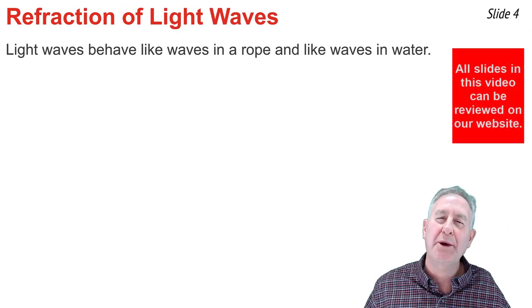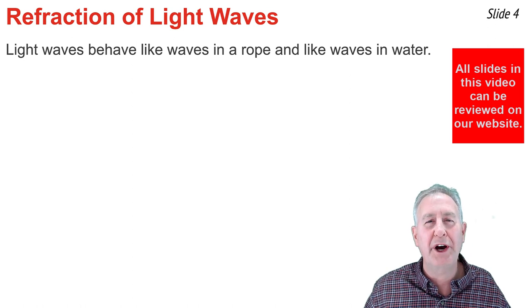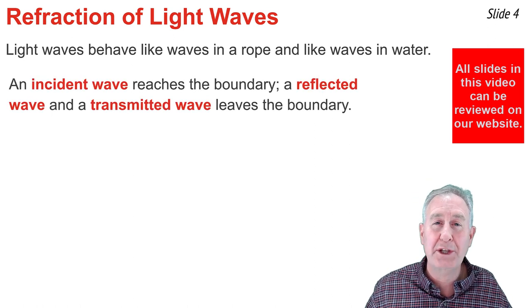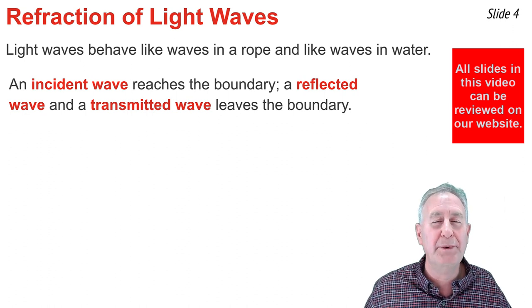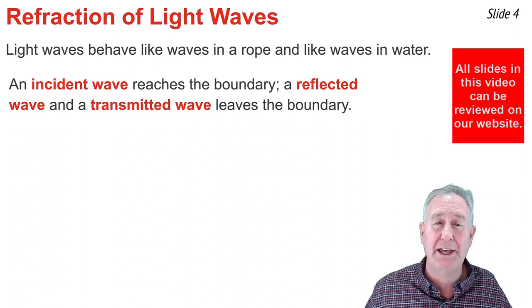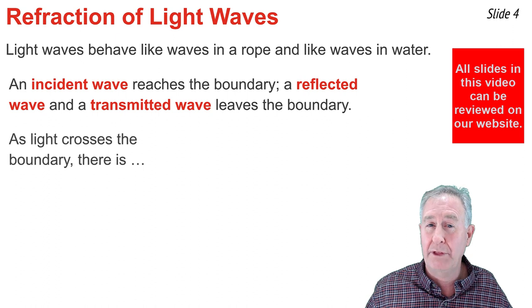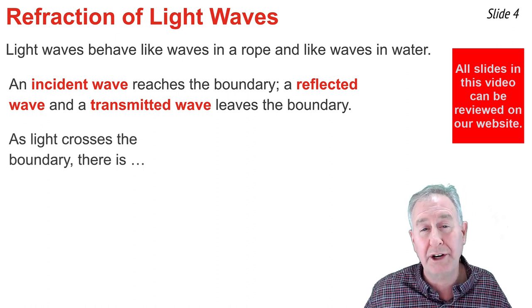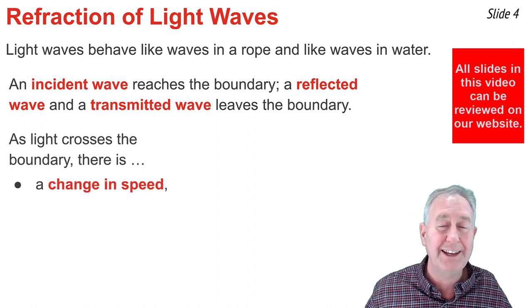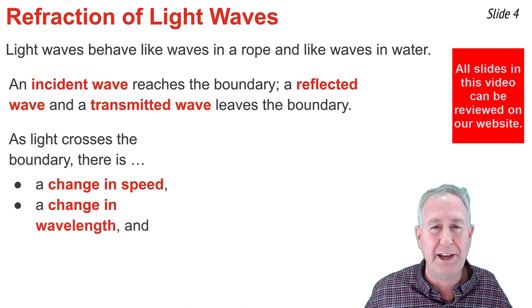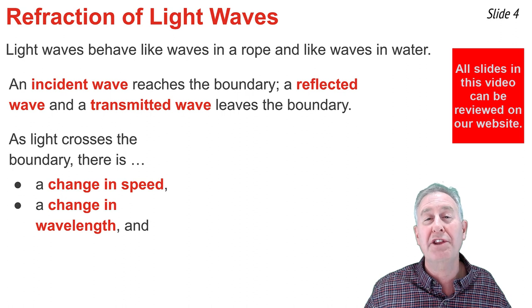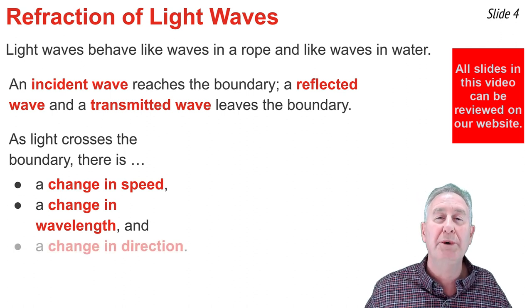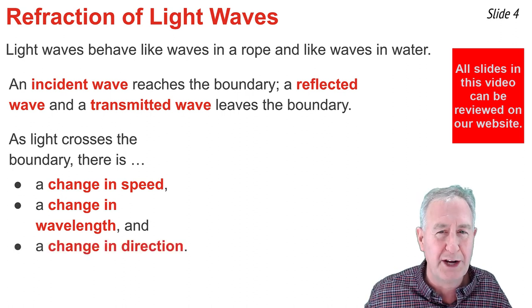Light waves behave much like waves in a rope and like waves in water. In saying that, I mean that the incident wave will approach the boundary, and at the boundary we'll see a reflected wave and a transmitted wave leaving that boundary. I also mean that for that transmitted wave that's in the new material, there will be a change in speed and a change in direction for that wave. And as long as the wave, the incident wave, is approaching the boundary in a direction that's not perpendicular to it, we will also observe a change in direction.